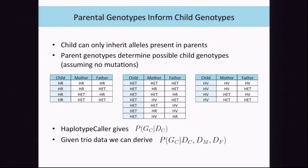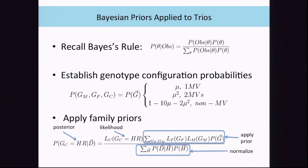We can use all of this family data to inform the probability of the child taking on each possible genotype—homozygous reference, heterozygous, or homozygous variant. Applying Bayes' rule, one factor in the prior is the genotype configuration probability. We penalize any configurations of the three family genotypes that have Mendelian violations, weighting them by the probability of a de novo mutation causing the violation—which is about 10 to the minus 8. Two Mendelian violations would be that value squared, which is even less likely. We multiply by the parental genotype likelihoods and marginalize over all combinations to arrive at the posterior child genotype.